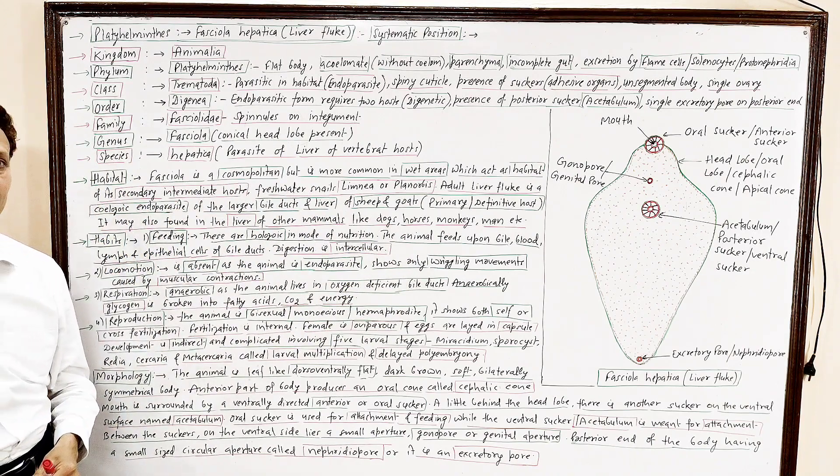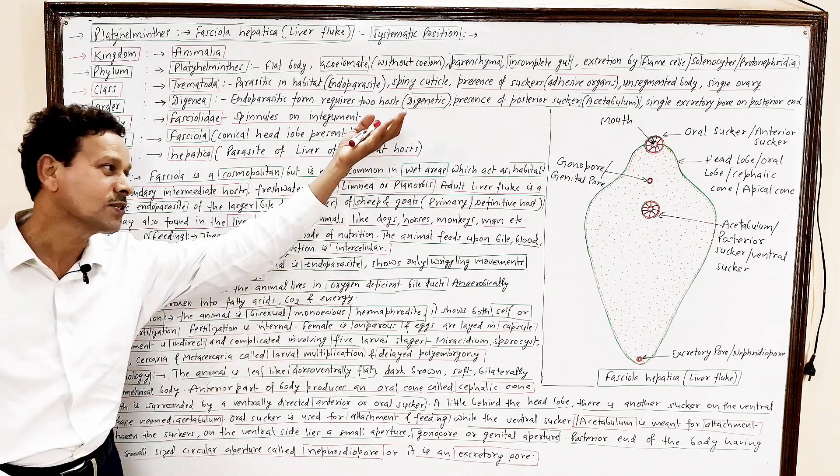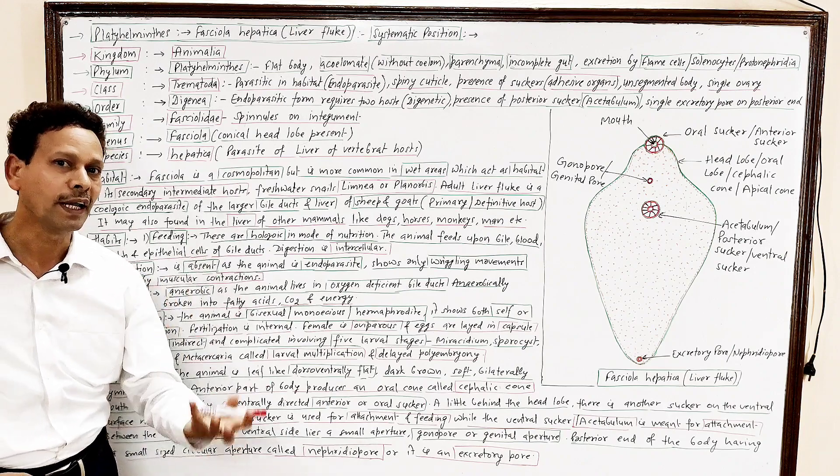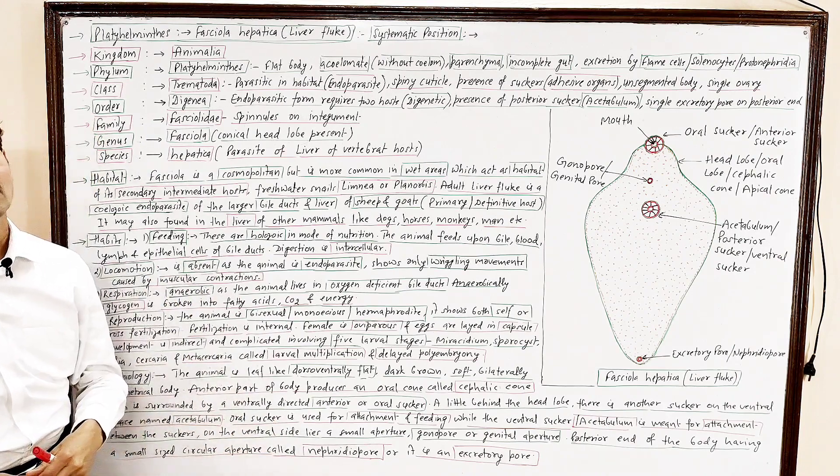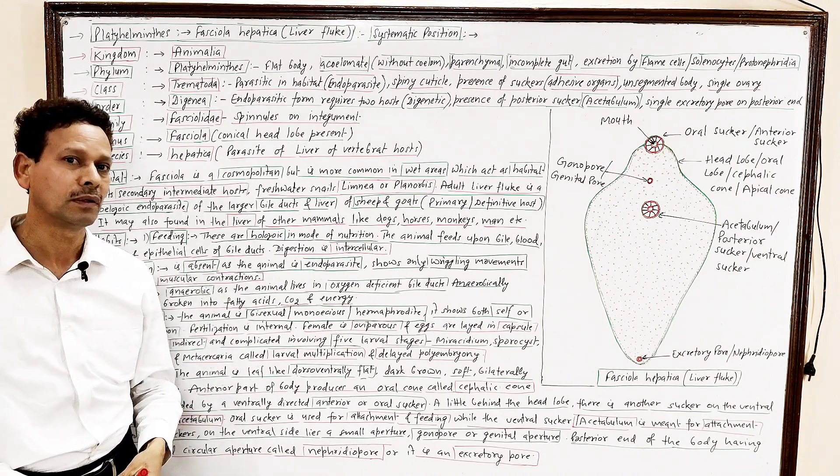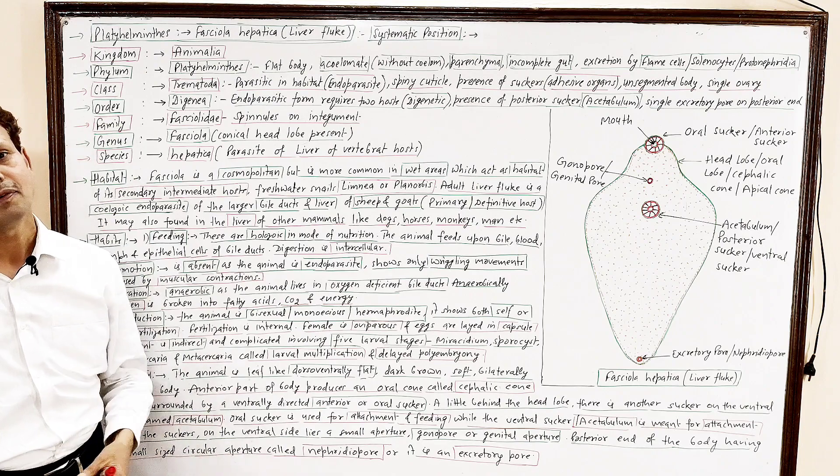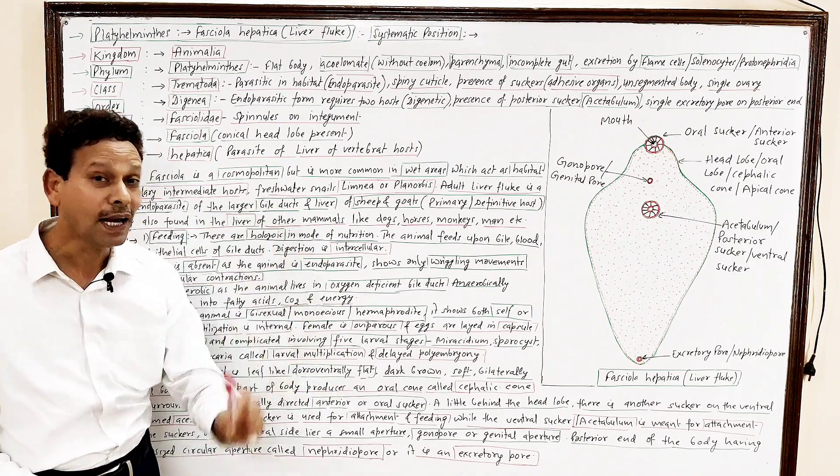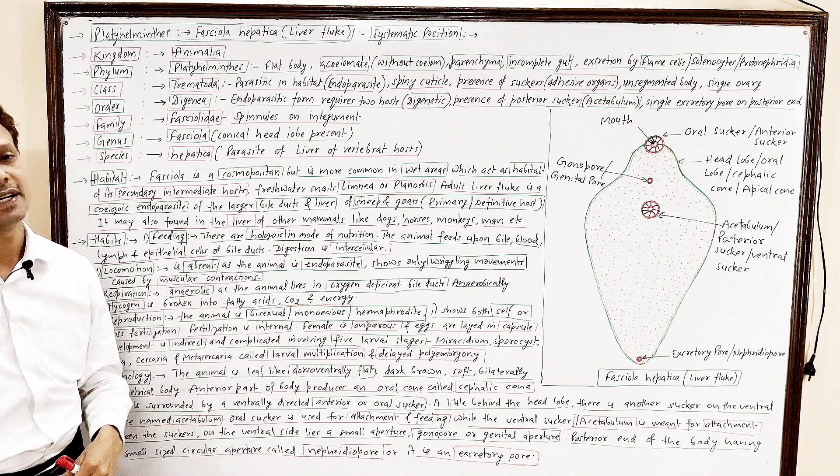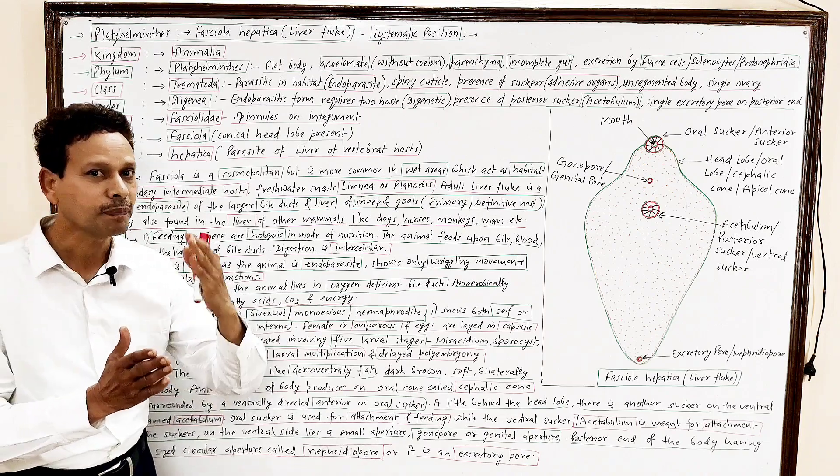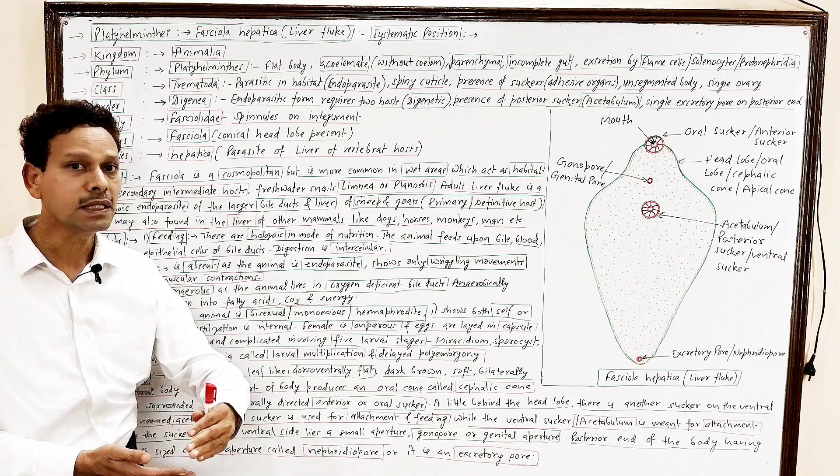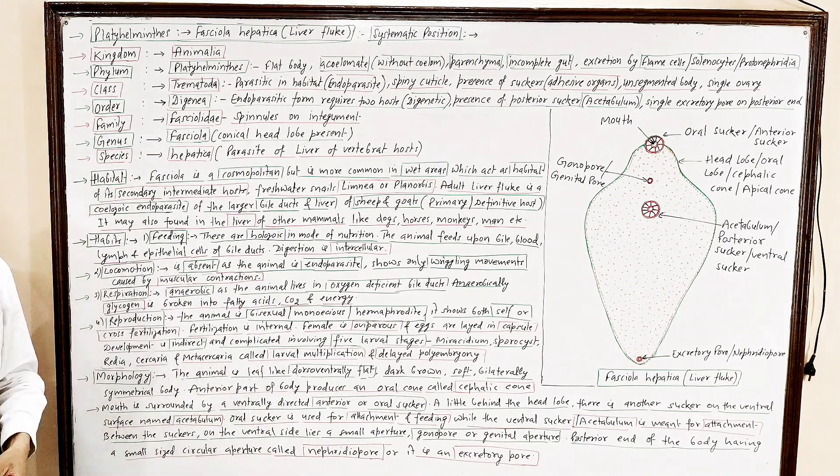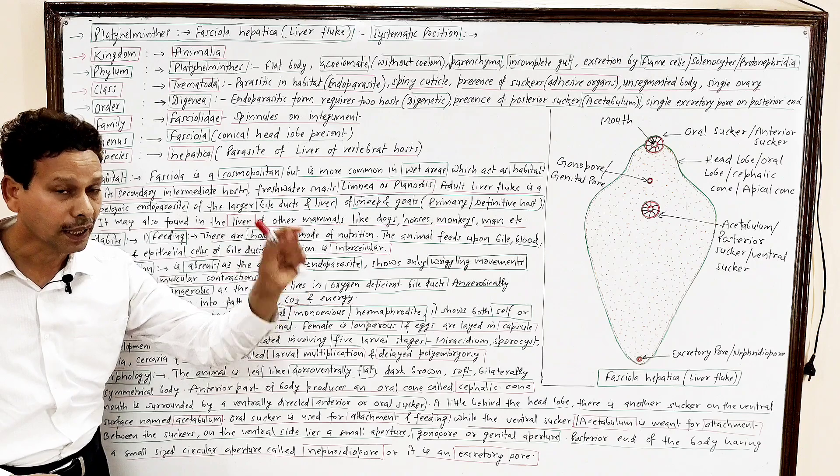Habits. Habits. Feeding. The Fasciola, the liver fluke, it is holozoic in mode of nutrition. It is mode of feeding. That is, complete animal-like, it feeds upon the blood, the lymph, the bile, and dear students, the epithelial cells of bile ducts. Digestion is, digestion is, digestion takes place in the gut. Means outside the cell, it is intercellular, it is extracellular. Digestion inside the gut, alimentary canal.